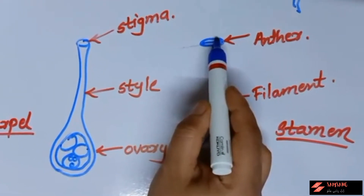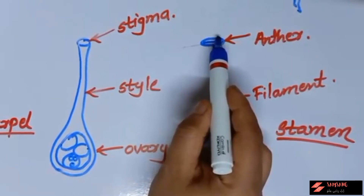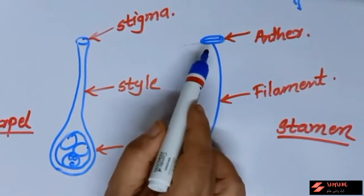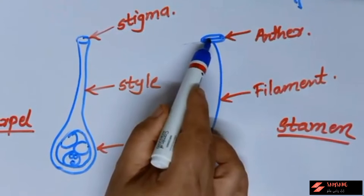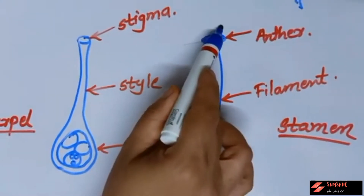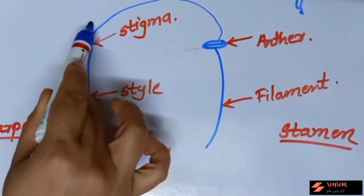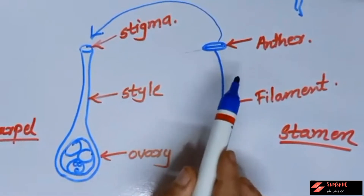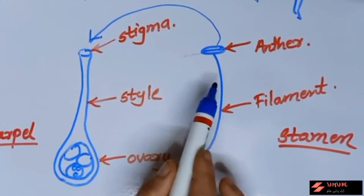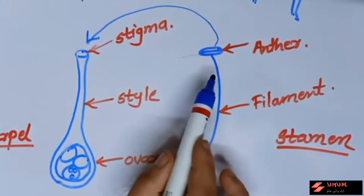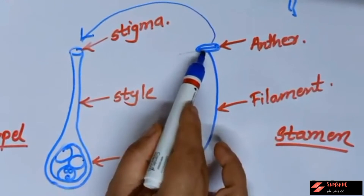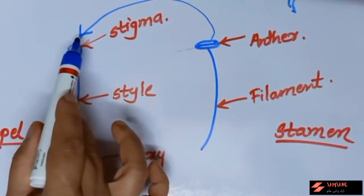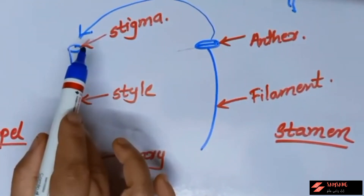In carpel, three different parts are there: one is stigma, in the middle there is a stock called style, and below the style there is a swollen part called ovary. Pollen grains are produced and stored inside the anther. The transfer of pollen grains from the anther of stamen to the stigma of carpel is called pollination.